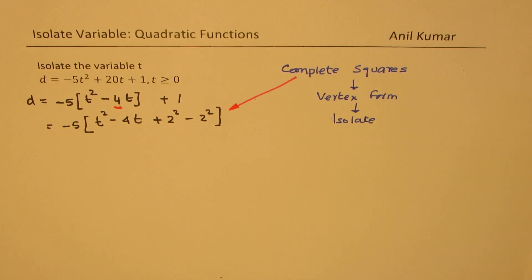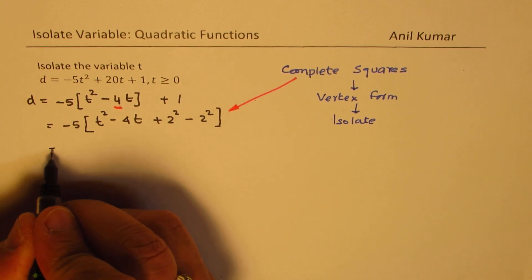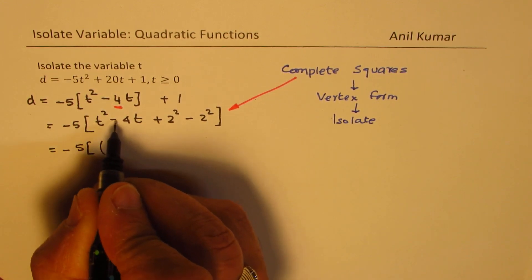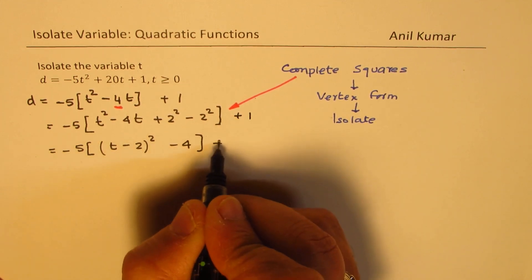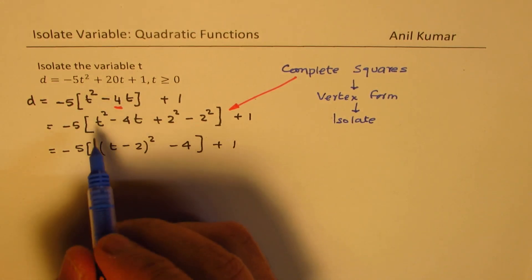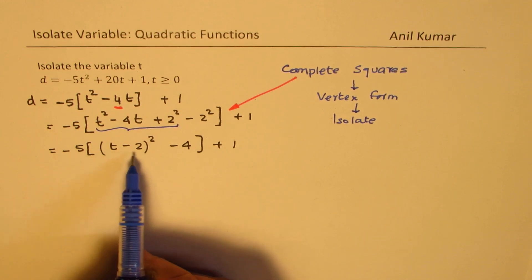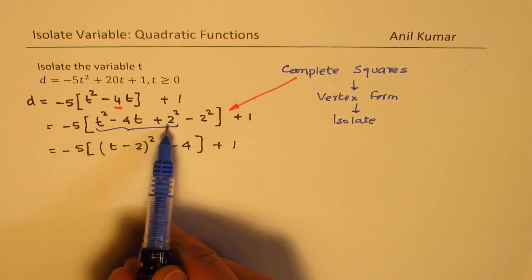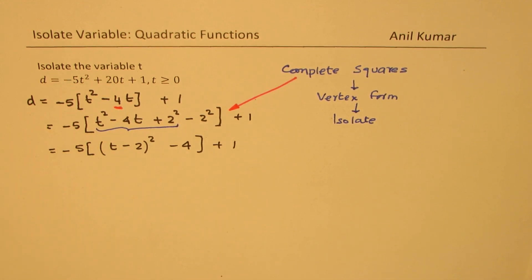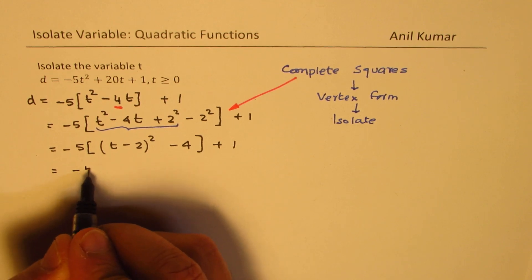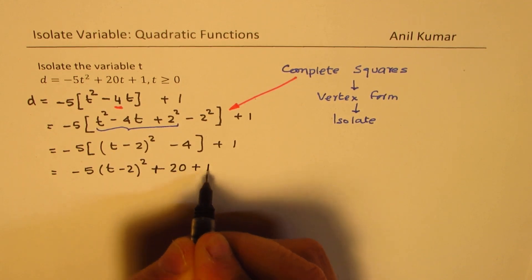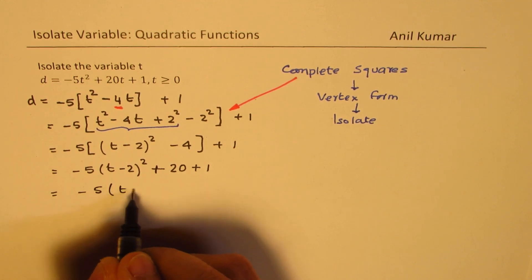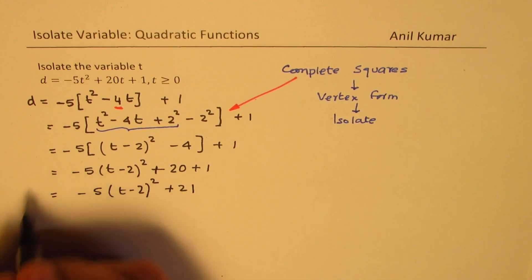Now what you notice is that we have a perfect square. So I could now write this as minus 5 times (t minus 2) whole square, and minus 2 squared is minus 4, plus 1. Now these three terms — (t minus 2) whole square equals t squared minus 2ab plus 2 squared — do you see how they are related? So that is the very important step to complete the squares. Now we could actually isolate our variable. Let's open this bracket. So we get minus 5(t minus 2) whole squared, and minus times minus becomes plus, so 5 times 4 is 20, plus 1. And we could write this as minus 5(t minus 2) whole squared plus 21. So this is what d is equal to.